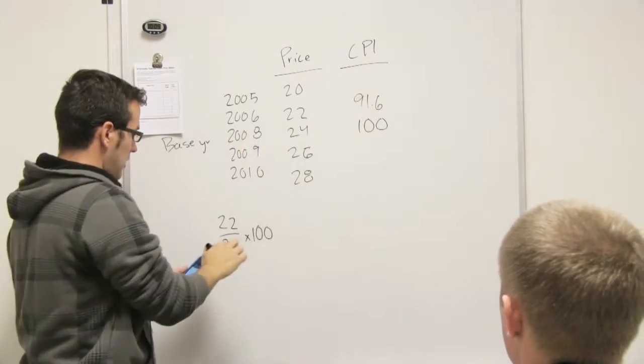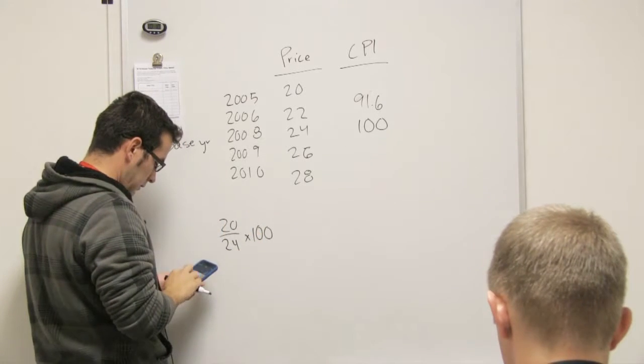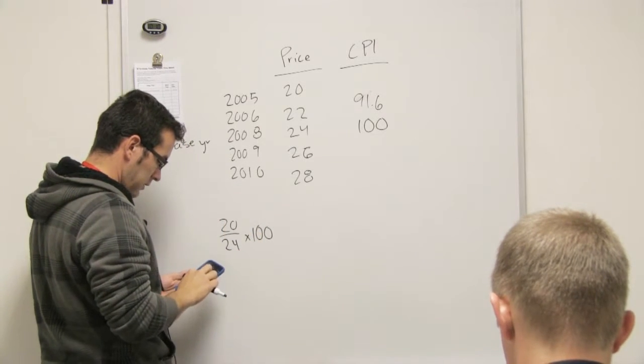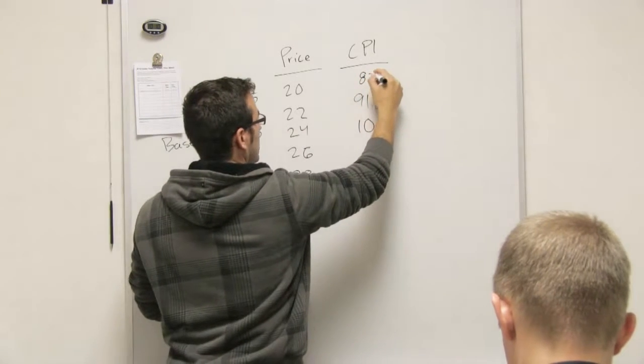And then if you do this other one right here, if you put 20 in here instead, you have 20 divided by 24 times 100, which is going to be 83.3.